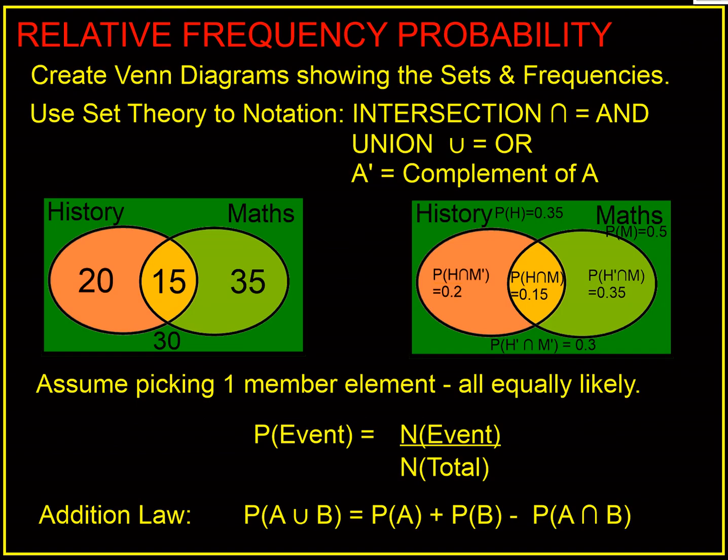Here's my quick summary of the subject. First thing you're going to do on relative frequencies: create Venn diagrams and be able to populate the sets and the frequencies. Remember you've got to be able to use the notation. Intersection is upside down U and means 'and'. Union is the U and that means 'or'. Where we've got an A with a little dash, that's a complement of A, that means all the people not in A.